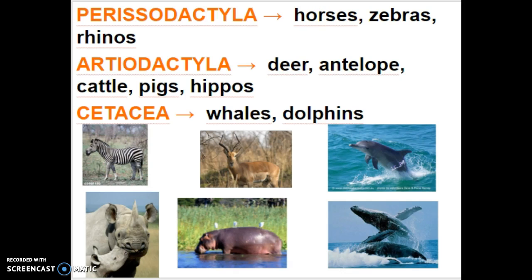Class Parasodactyla: dactyl in Latin means fingers — in this case, hooves — so these are the odd-toed mammals: horses, zebras, and rhinos. The Arteodactylans are the even-toed mammals: deer, antelope, and farm-type cattle like pigs, etc. The cetaceans are the whales and dolphins. Remember, for each one of these 12 orders you will need to know one example of each animal.